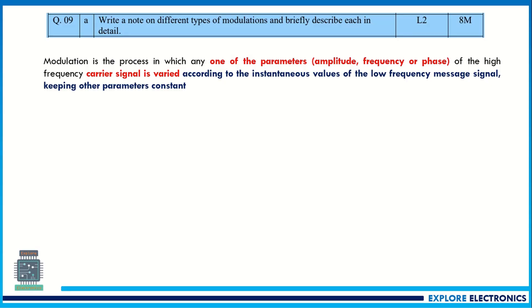So before writing that, write the definition of modulation. It is a process in which any one of the parameters like amplitude, frequency or phase of the high frequency carrier signal is varied in accordance with the instantaneous value of the low frequency message signal, keeping other parameters constant. This definition carries one mark.